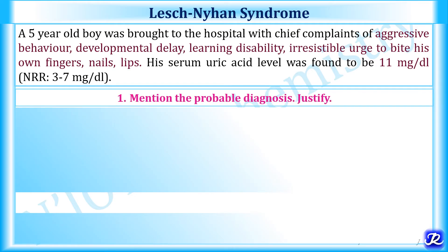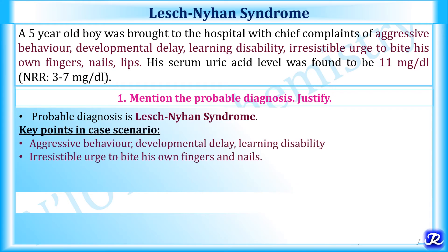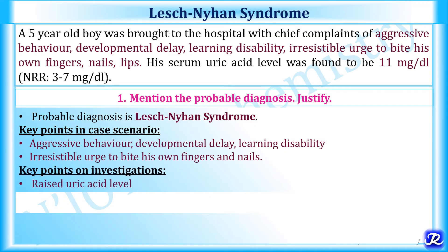The probable diagnosis is Lesch-Nyhan syndrome. Justification includes aggressive behavior, developmental delay, and learning disability — all neurological abnormalities seen in Lesch-Nyhan syndrome — and the irresistible urge to bite his own fingers, nails, and lips, which is the self-mutilation behavior characteristic of the behavioral abnormalities in this syndrome. On investigation, there is hyperuricemia with uric acid at 11 mg/dL, which further favors the diagnosis of Lesch-Nyhan syndrome.